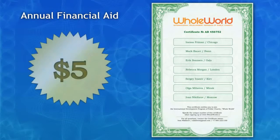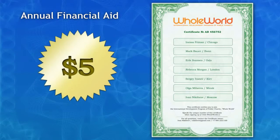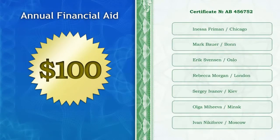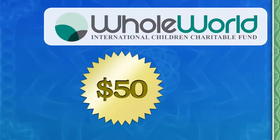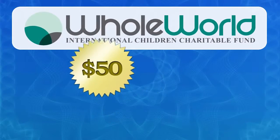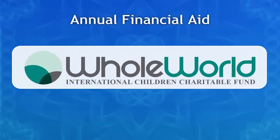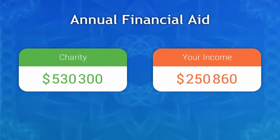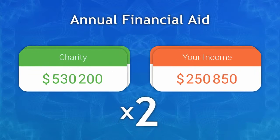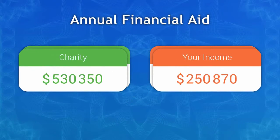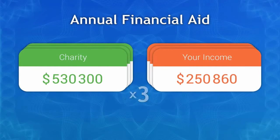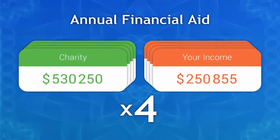It is important to note that financial assistance in accordance with the rules of the system is provided annually by each participant. Thus, it is possible to send to charity more and more money every year. Your income at the same time is renewed annually and time and time again, you will receive monetary transfers from people all over the world.